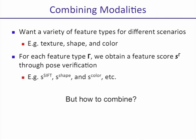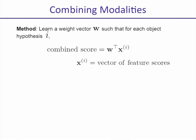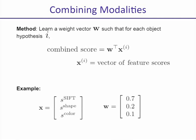The question is: how do we combine the feature scores that we obtain? One simple method might be to learn a weight vector W such that for each object hypothesis, our combined score is just W transpose X, where X is our vector of feature scores. For example, if we had SIFT, shape, and color feature scores, our weight vector might be 0.7, 0.2, and 0.1. We might handpick this according to the intuition that SIFT descriptors are more discriminative than shape descriptors, which in turn are more discriminative than color descriptors.